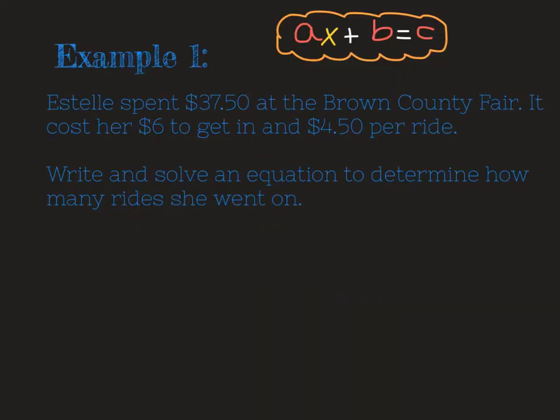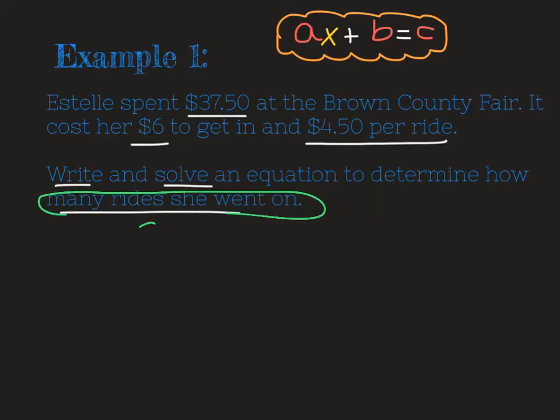Our first example tells us that Estelle spent $37.50 at the Brown County Fair. It cost her $6 to get in and $4.50 per ride. And we're being asked to write and solve an equation to determine how many rides she went on. As I read this, I was thinking to myself, what is my unknown? What is the piece that I don't know here? And we're trying to figure out how many rides she went on. That's going to be my x, right? That's the variable.